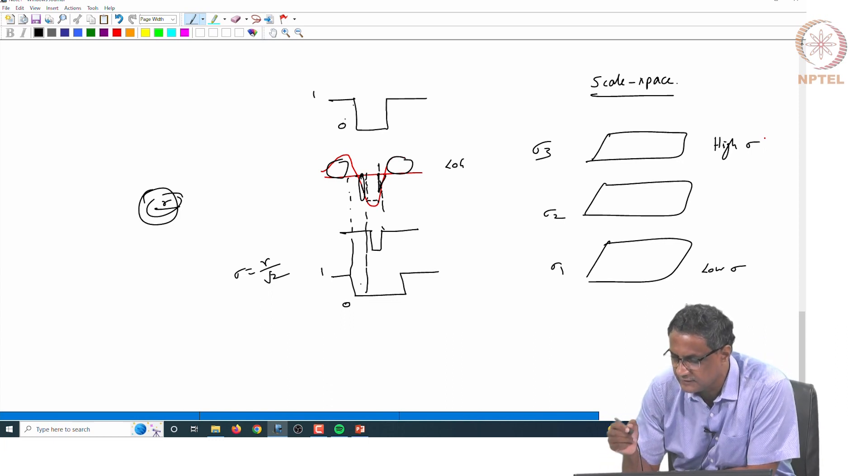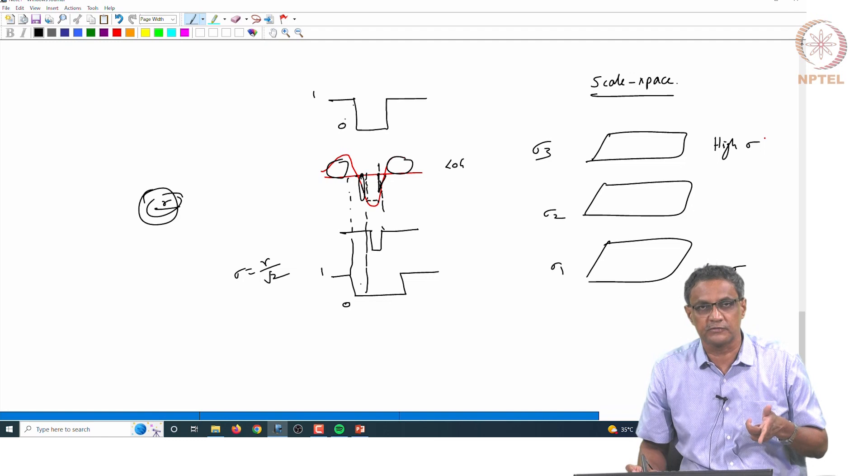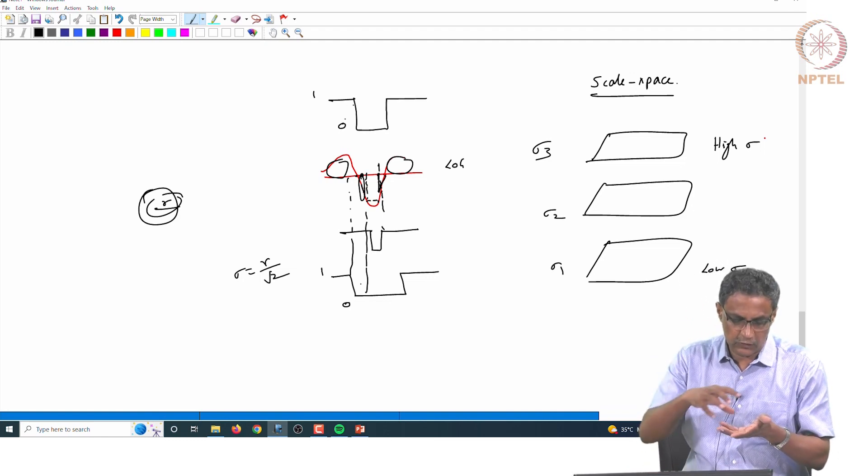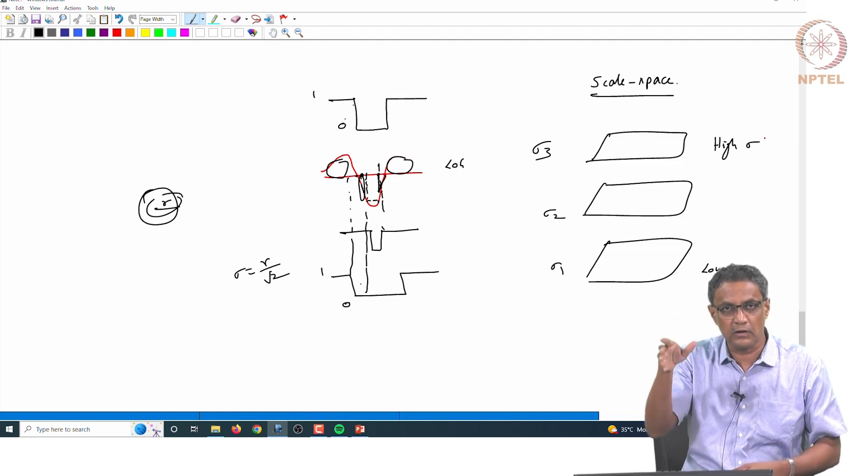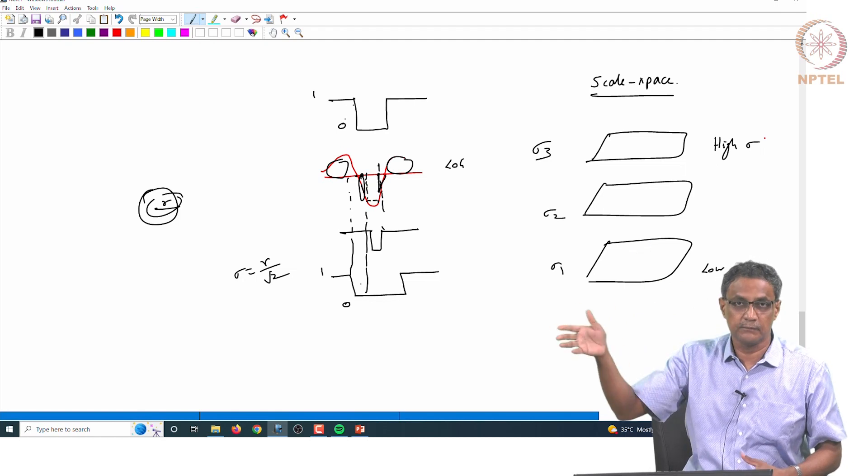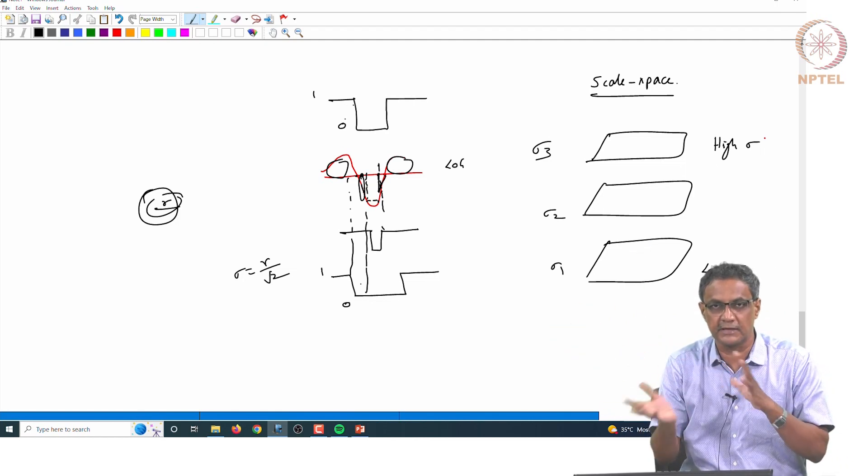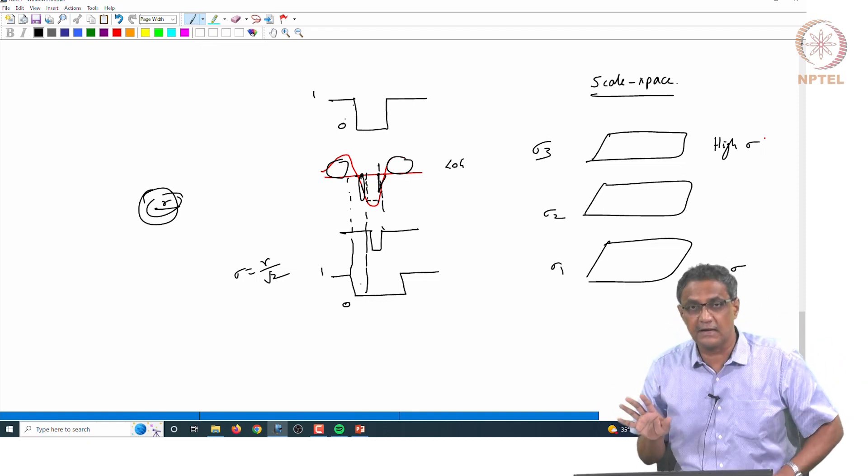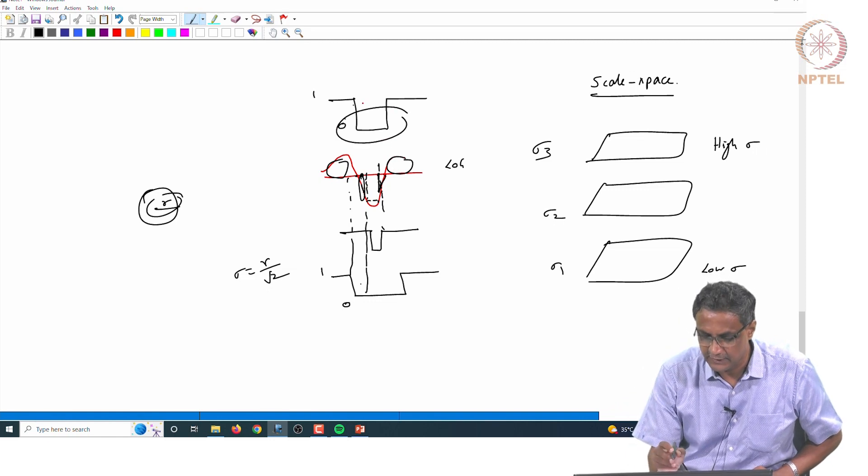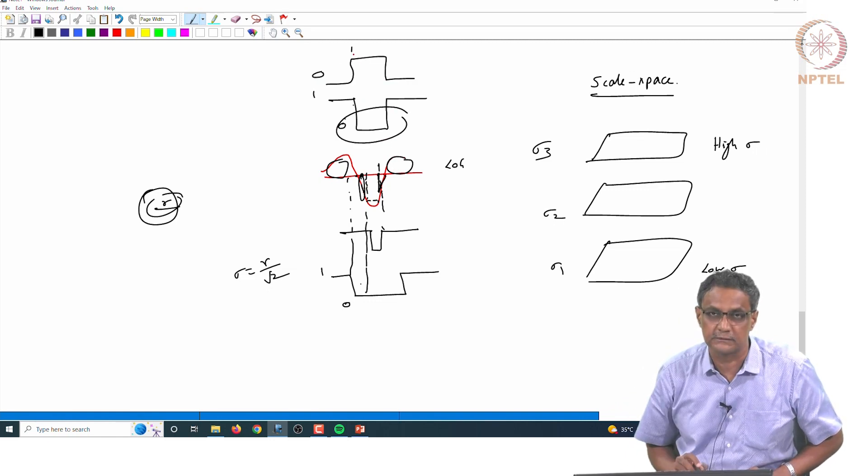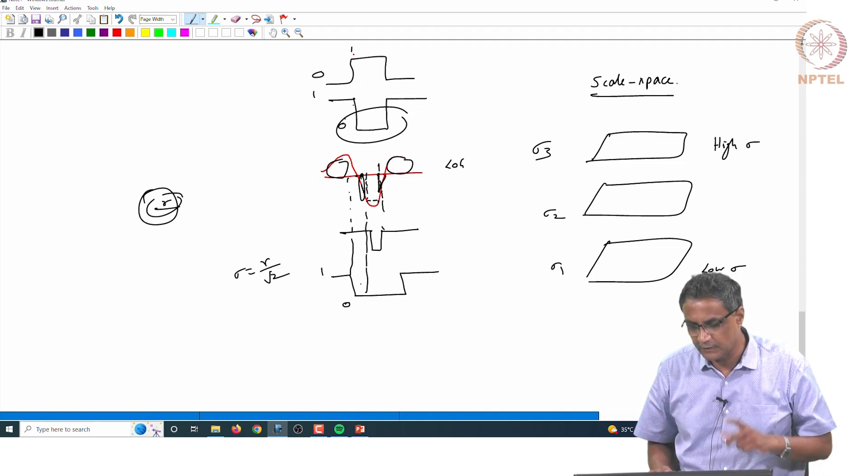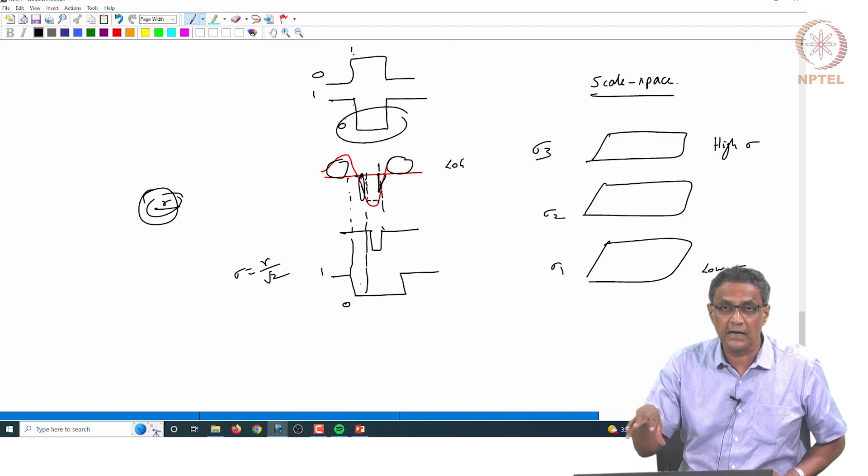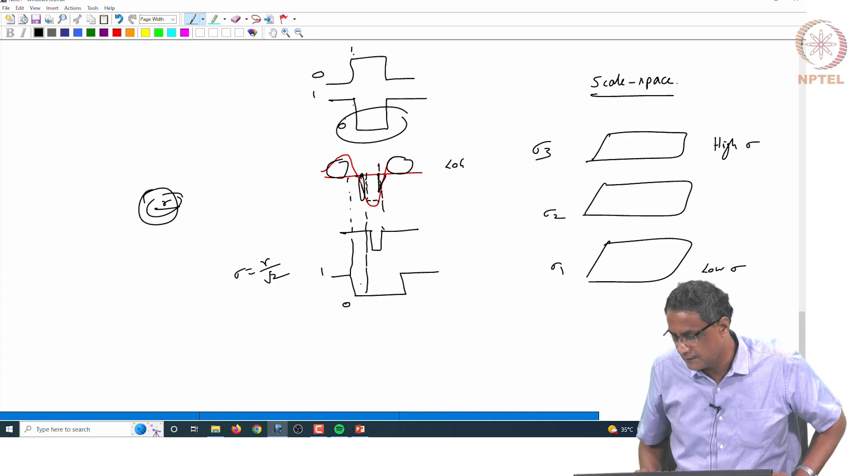Now, what is typically done is, in order to get the max - and of course you are looking at the magnitude response. Because it could be a minimum, it could be a maximum, both are okay. When you say a blob, it could also be 1 going to 0 or it could also be a 0 and then a 1. Both are blobs. Except that in one case it will be the opposite extrema. In one case it is a maximum, in another case it is a minimum. Both are relevant for us. Therefore, what is analyzed is the strength of the scale normalized response.